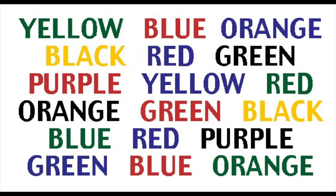Let's do another example. Now you try to read the words that you see on this chart and we will do it together. Ready? Three, two, one: yellow, blue, orange, black, red, green, purple... Now we try to read the colors of each word. I will begin with you, then I will leave you alone. Let's go: three, two, one: green, red, blue...